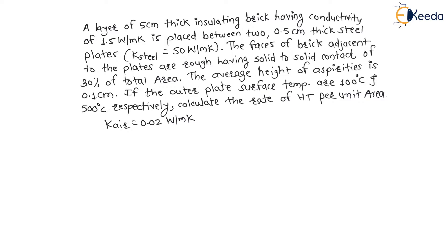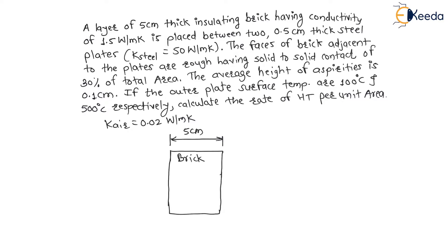Here they have given one insulating brick material. The brick is 5 cm thick, so this thickness will be 5 cm. The thermal conductivity of brick is 1.5 W per meter Kelvin. This brick plate is placed between two 0.5 cm thick steel plates having thermal conductivity of 50 W per meter Kelvin.